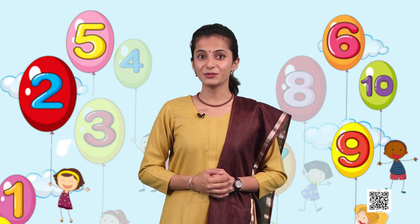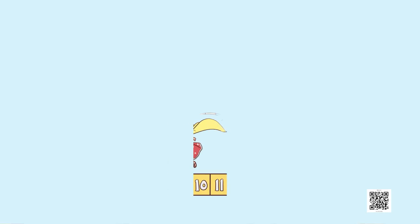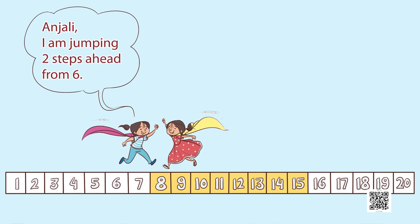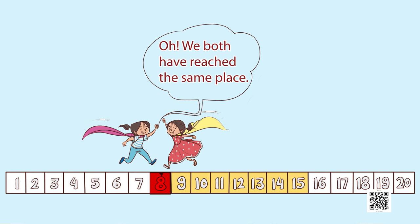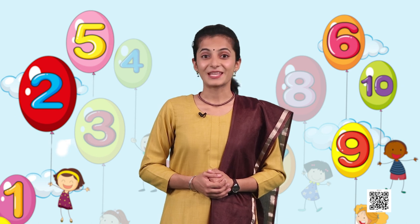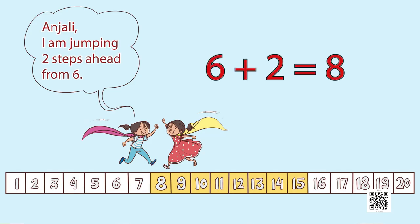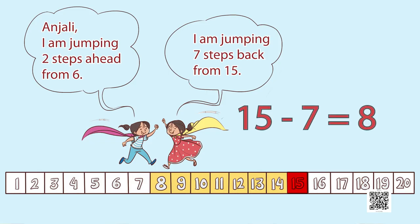Dear learners, till now we were doing subtraction by removing some objects. But now we will do subtraction by jumping on the number strip. For addition we jump forward, and for subtraction we are going to jump backwards. Let's see how Anjali and Renu are playing. Renu says: I am jumping 2 steps ahead from 6. Anjali says: I am jumping 7 steps back from 15. Both of them reached the same place — because 6 plus 2 is 8, and 15 minus 7 is also 8.